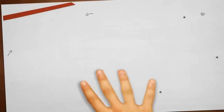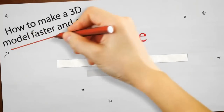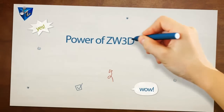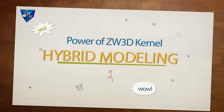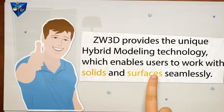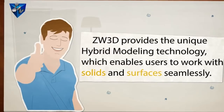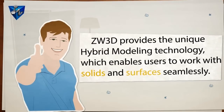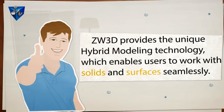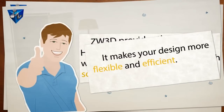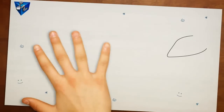How to make a 3D model faster and easier? For this question, we've got ZW3D. Let's see its hybrid modeling function. ZW3D provides the unique hybrid modeling technology which enables users to work with solids and surfaces seamlessly. It makes your design more flexible and efficient.